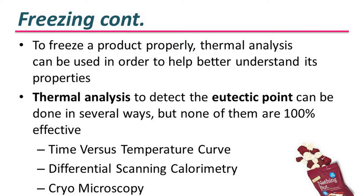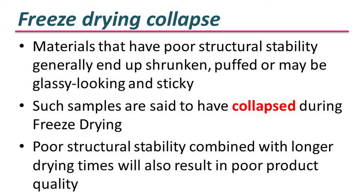Thermal analysis to detect the eutectic point can be done in several ways, but none of them are 100% effective. They are: time versus temperature curve, differential scanning calorimetry, and cryomicroscopy. Materials that have poor structural stability generally end up shrunken, puffed, or glassy-looking and sticky after freeze drying. Such samples are said to have collapsed during freeze drying, and poor structural stability combined with longer drying time will also result in poor product quality.